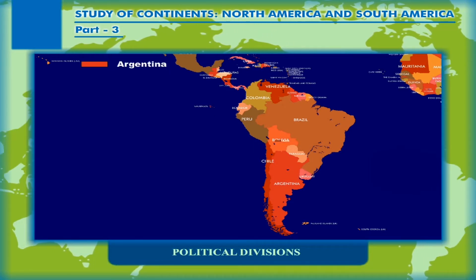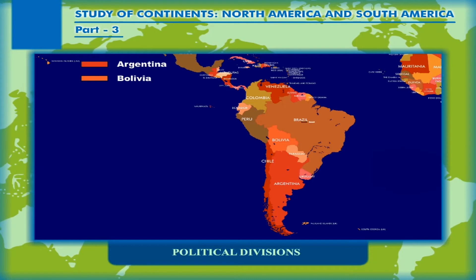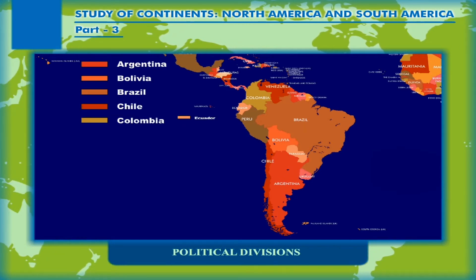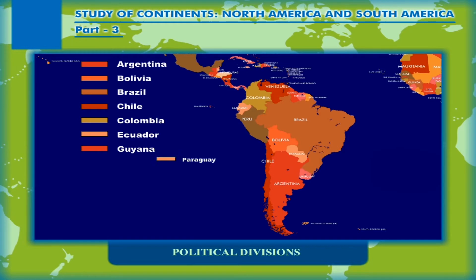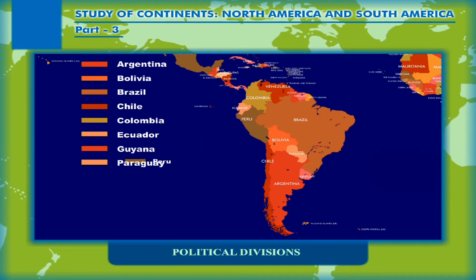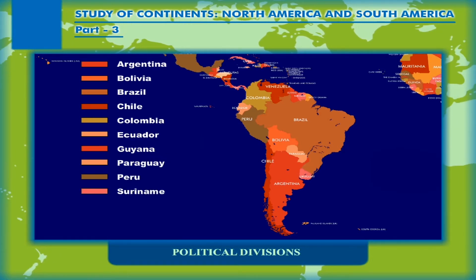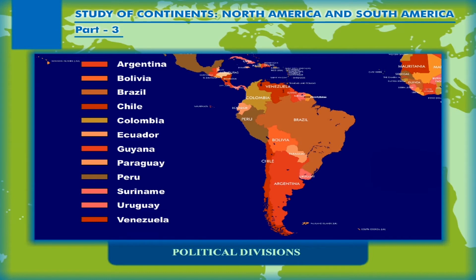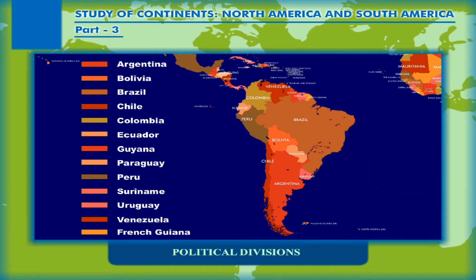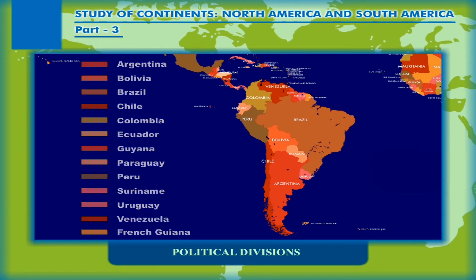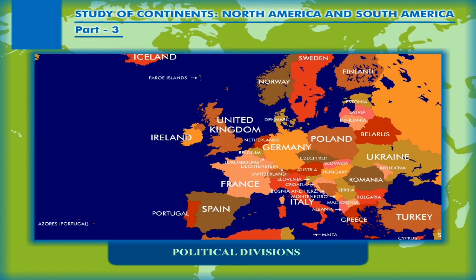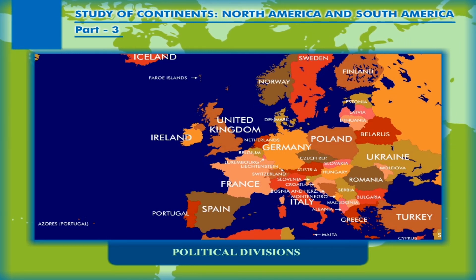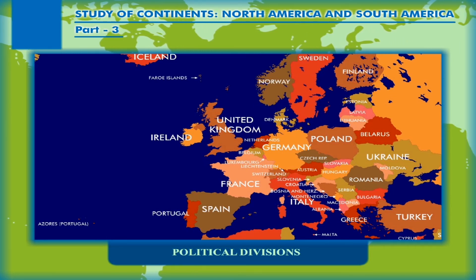The 12 independent countries of South America are Argentina, Bolivia, Brazil, Chile, Colombia, Ecuador, Guyana, Paraguay, Peru, Suriname, Uruguay, and Venezuela. French Guiana is a French territory, and the Falkland and South Georgia Islands are under the control of the United Kingdom.